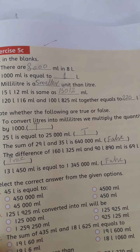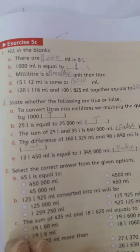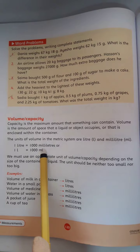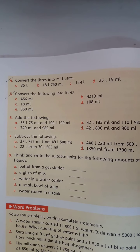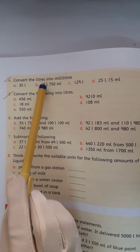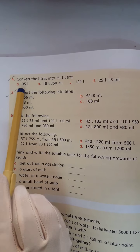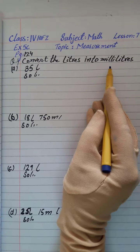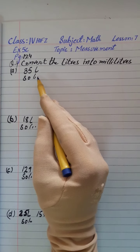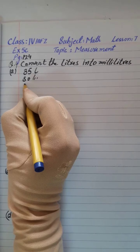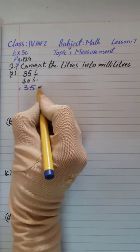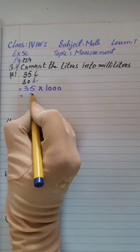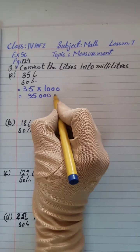Class 4, you have question number 3 - select the correct answer from the given options. You have to solve it by yourself in your textbook. Now open page number 124. Question number 4: convert the litres into millilitres. You know that 1 litre is 1000 millilitres, so we multiply by 1000. Part A: 35 litres. Answer is 35,000 millilitres.